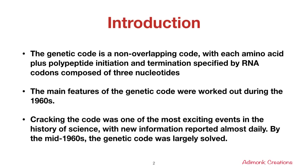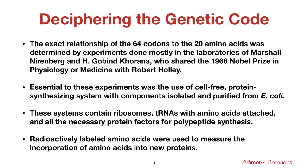Next is deciphering the genetic code. The exact relationship of the 64 codons to the 20 amino acids was determined by experiment, mostly in the laboratories of Marshall Nirenberg and Har Gobind Khorana. For their work, they received the Nobel Prize in 1968 in the field of physiology or medicine, along with Robert Holley.